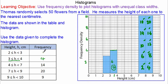Moving on to the bar 2 to 3, the height is 3. Again the base is 1, so the area and the frequency is 3.